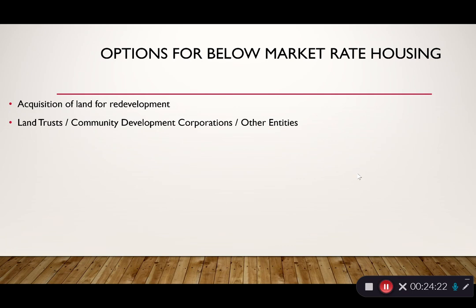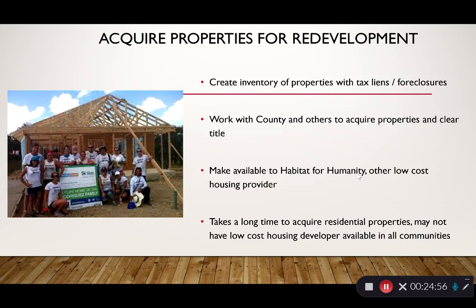Shifting to below-market-rate housing — actually subsidized housing for very low-income families. One approach is acquiring land for redevelopment: the city spends money to buy land, takes that cost burden off a potential developer, and gives the land to a developer who agrees to build affordable housing. Land trusts and community development corporations are non-profit organizations focused on building housing and can be a way to provide low-cost housing. Habitat for Humanity is a great example — they build low-cost housing and empower families by including them in the construction.